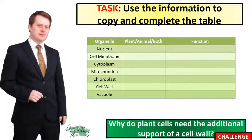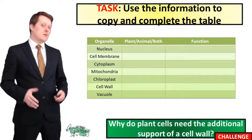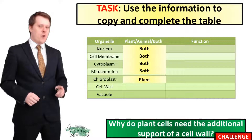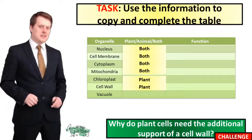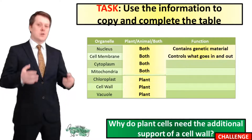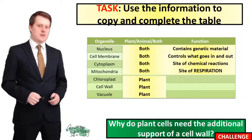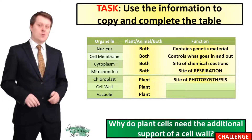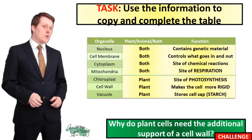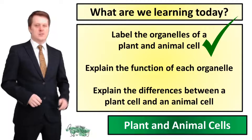Have you filled out that table? Let's look at some answers. Our nucleus is found in both plants and animals. So is our cell membrane, our cytoplasm, and our mitochondria. Our chloroplast is only found in the plant cell. Our cell wall is only found in the plant cell. And our vacuole is only found in the plant cell. The nucleus contains genetic material. The cell membrane controls what goes into and out of the cell. The cytoplasm is the site of chemical reactions, and the mitochondria is the site of respiration. The chloroplast is the site of photosynthesis and the cell wall is there to make the cell more rigid. The vacuole stores cell sap. Plant cells need the additional support of a cell wall because they do not have a skeleton, whereas animals have a skeleton for their support.